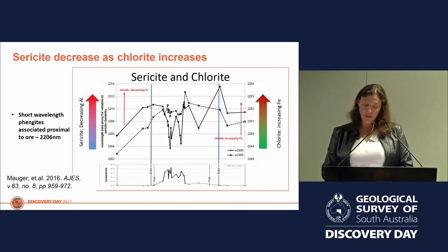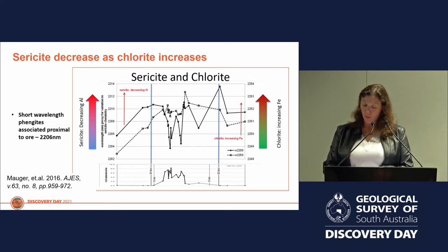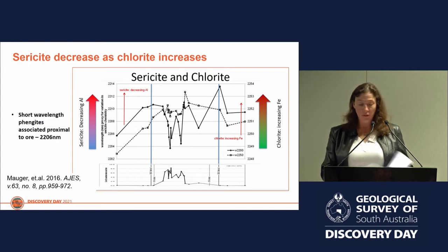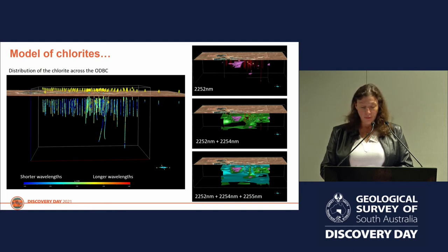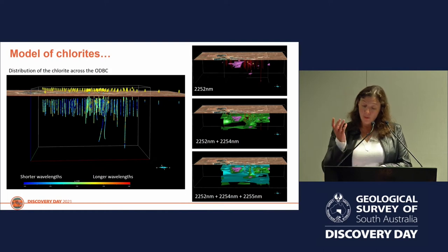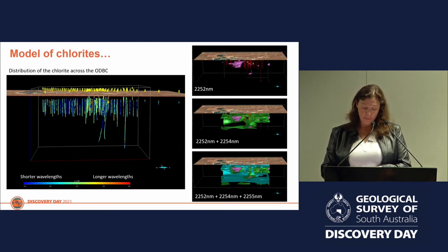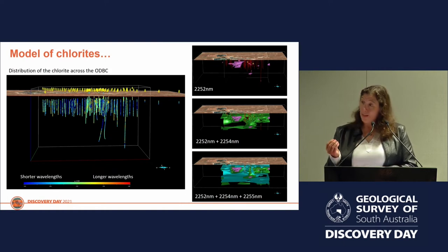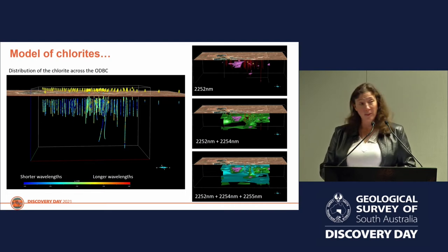Sericite increases as chlorite decreases. Chlorite has two main features in the short-wave infrared: one at 2250 nanometres and the other at 2350 nanometres. Both features shift to longer wavelengths as iron replaces magnesium in the chlorite structure. We plotted the difference between short-wavelength chlorites at 2248 nanometres and longer-wavelength chlorites at 2252 nanometres, reflecting that chemical change from magnesium to iron-rich. Plotting these changes as ISO shells, we can see shorter wavelengths surrounded by longer wavelengths — information we can use to inform IOCG exploration across the Olympic domain and reveal something about the mineralogy that can affect processing.